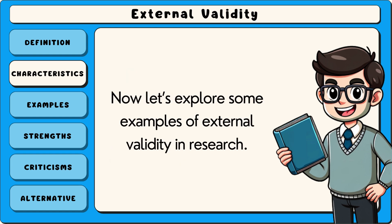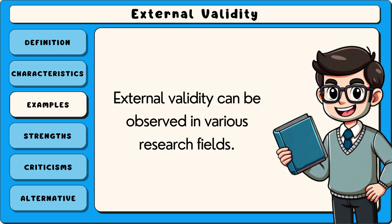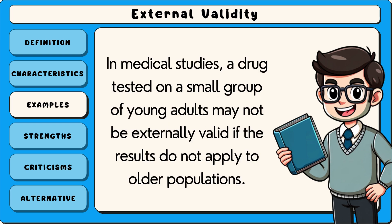Now let's explore some examples of external validity in research. External validity can be observed in various research fields. In medical studies, a drug tested on a small group of young adults may not be externally valid if the results do not apply to older populations.